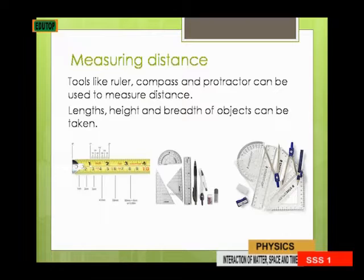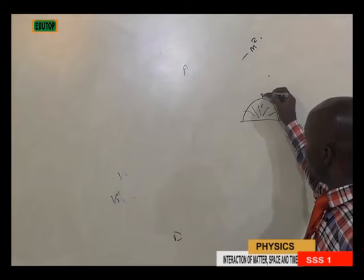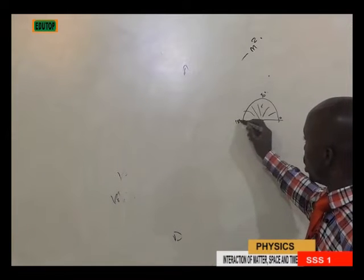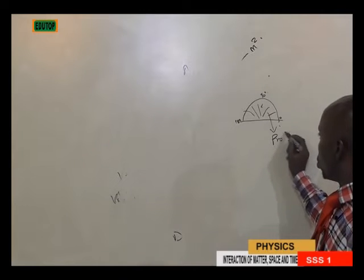Tools include the ruler, compass, and protractor. A lot of people have the mathematical set but don't actually know the names of the devices. The protractor is the device calibrated from 0 to 90 degrees and from there down to 180 degrees.